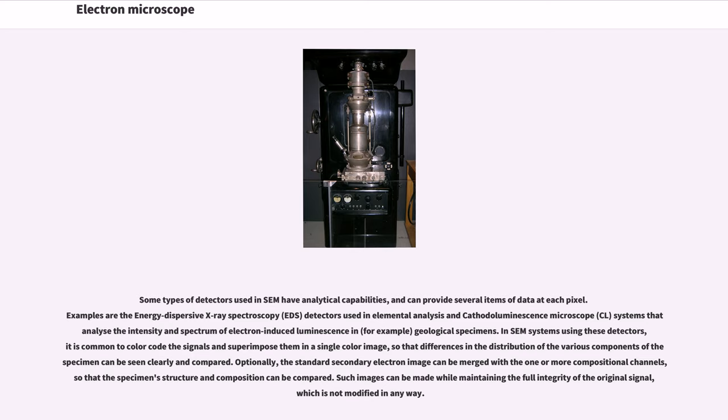Some types of detectors used in SEM have analytical capabilities, and can provide several items of data at each pixel. Examples are the energy dispersive X-ray spectroscopy EDS detectors used in elemental analysis and cathodoluminescence microscopy CL systems that analyze the intensity and spectrum of electron induced luminescence in, for example, geological specimens. In SEM systems using these detectors, it is common to color code the signals and superimpose them in a single color image, so that differences in the distribution of the various components of the specimen can be seen clearly and compared.